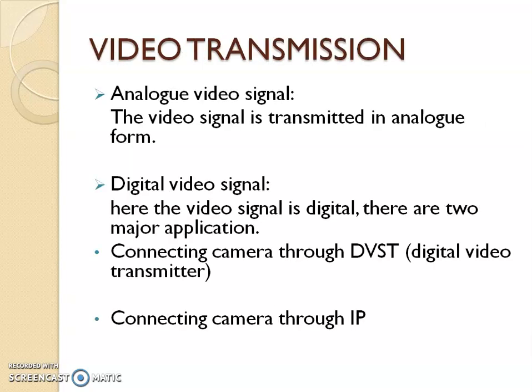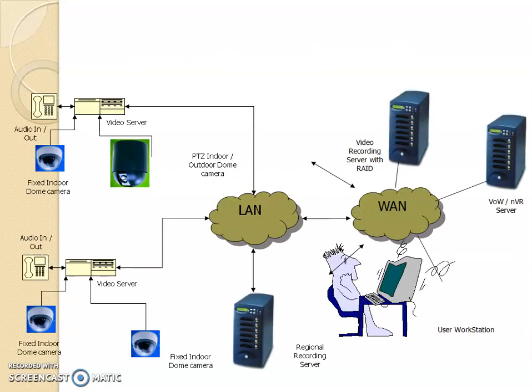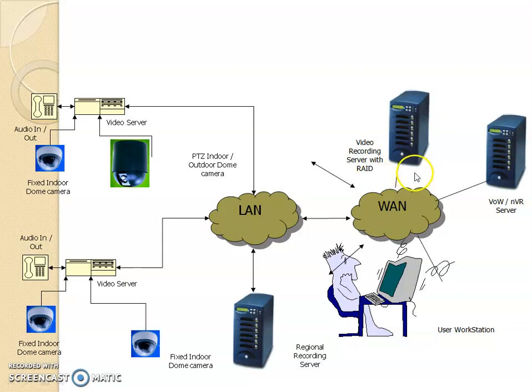For video transmission, you need analog video signals or digital video signals. This video transmission can be done through a wide area network or through a LAN, which means you can remotely monitor the camera from your mobile or from your computer.